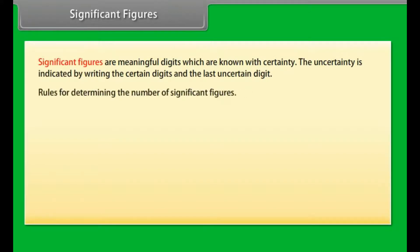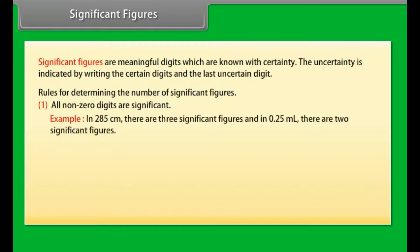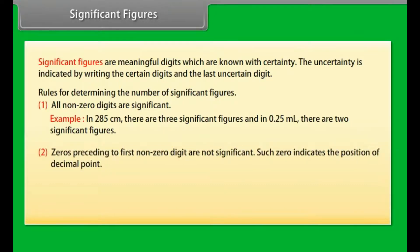Rules for determining the number of significant figures: All non-zero digits are significant. Example: in 285 cm, there are three significant figures, and in 0.25 mL, there are two significant figures. Zeros preceding the first non-zero digits are not significant. Such zeros indicate the position of decimal point. Thus, 0.03 has one significant figure and 0.0052 has two significant figures.